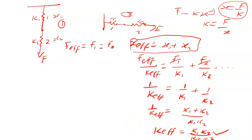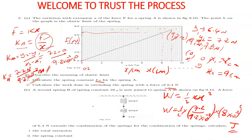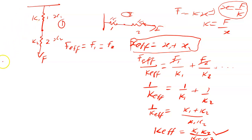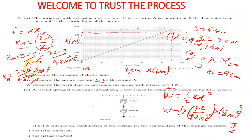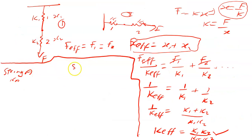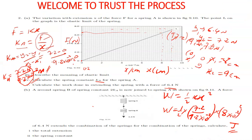Now, back to the question. There is an extra spring B with a spring constant of 2kA. Spring A has spring constant kA, whose value was calculated previously. Spring B has spring constant 2kA. From the diagram, we can see that these two springs are connected in series.